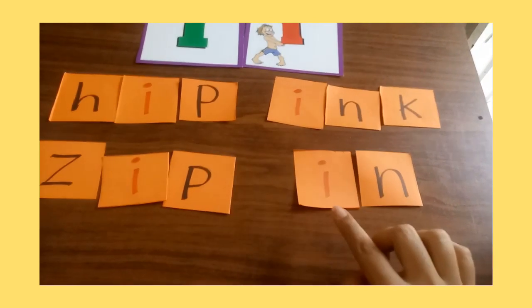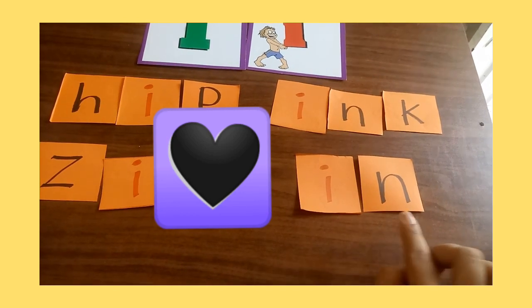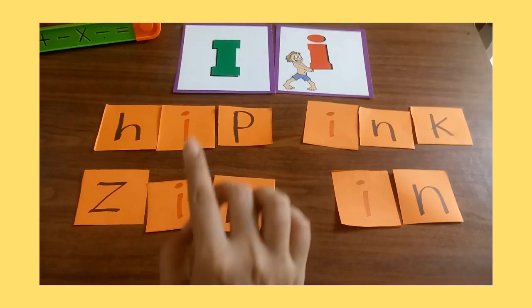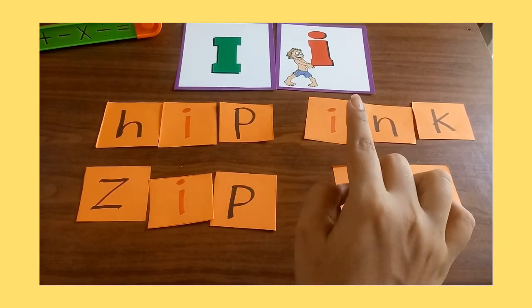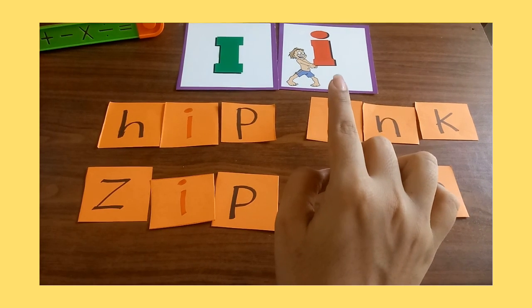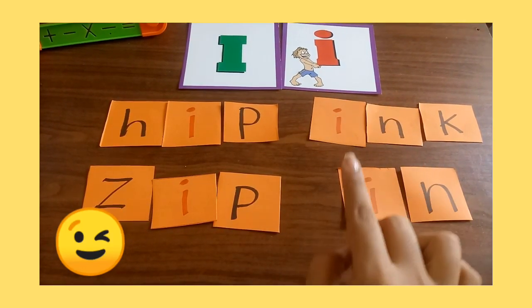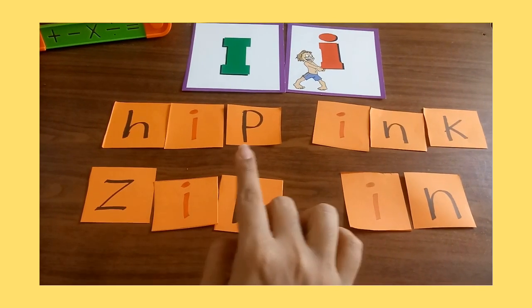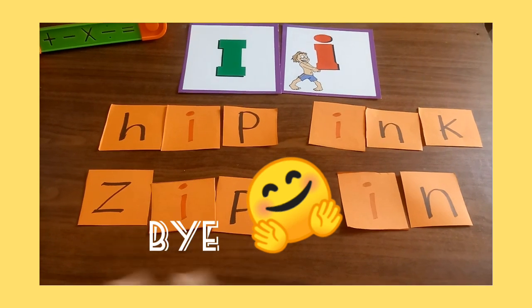So these are the four words of the letter I: hip, ink, zip, in. Very good girls.